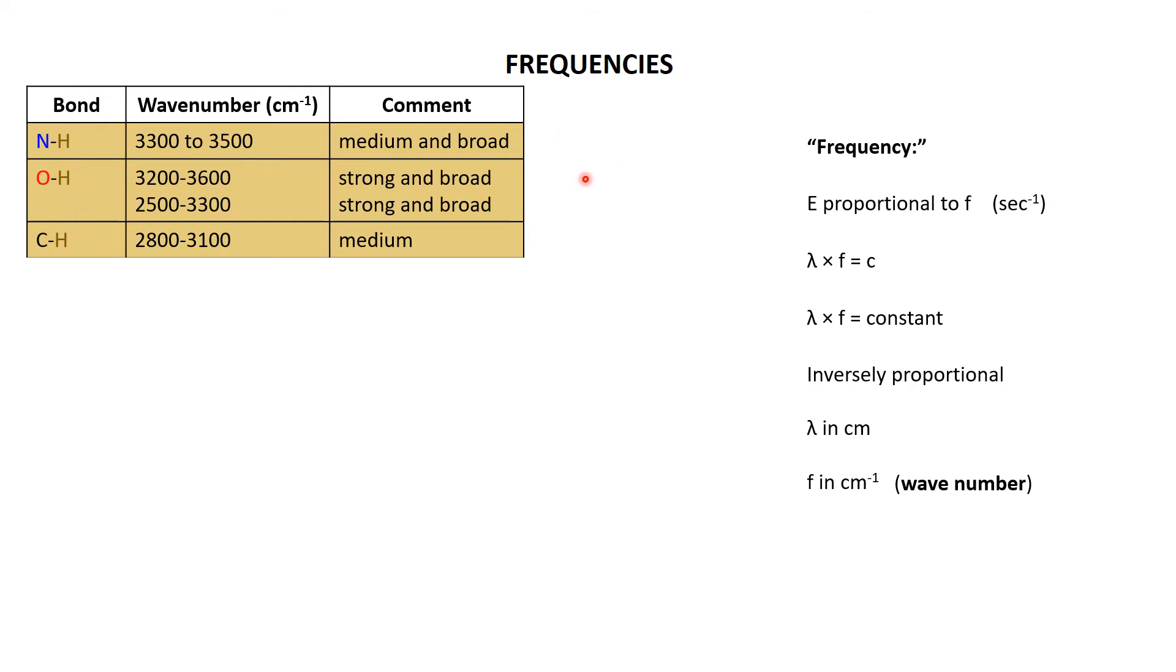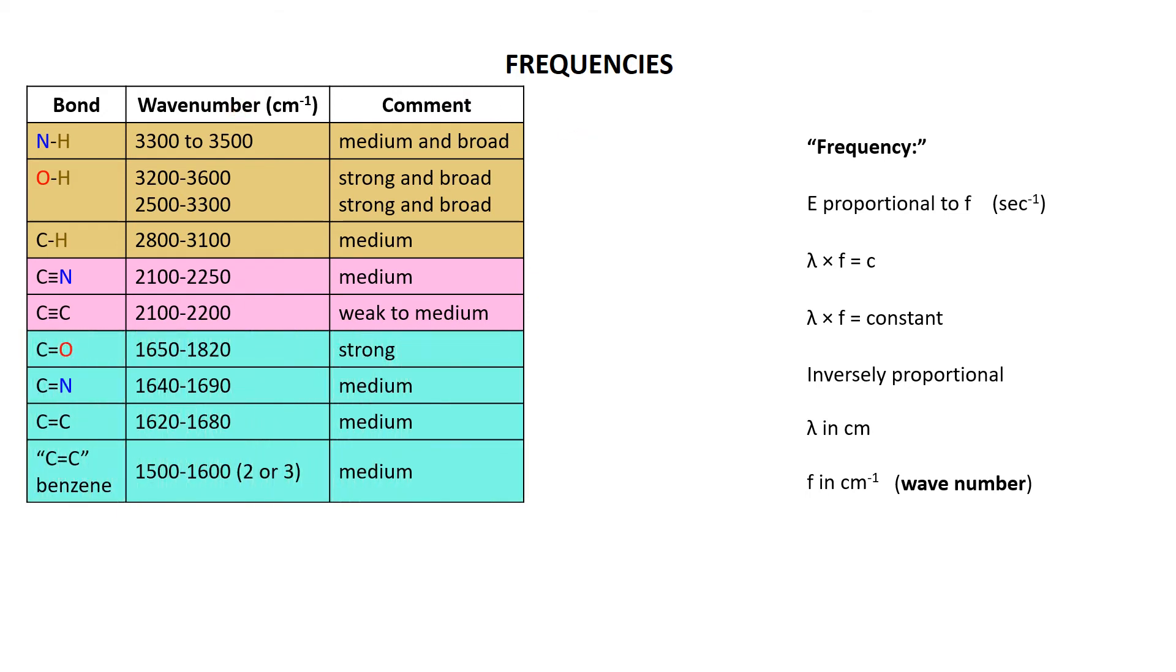Then we said in the previous movie that the stronger the bond, the higher the frequencies. After we've got rid of the bonds to hydrogen, the next ones we see are triple bonds. We already saw a carbon oxygen triple bond at 2146. Carbon carbon triple bonds, 2100 to 2200. Carbon nitrogen triple bonds, 2100 to 2250. So if you've got a triple bond, you're going to see some kind of absorption in this 2100 to 2250 wavenumber range.